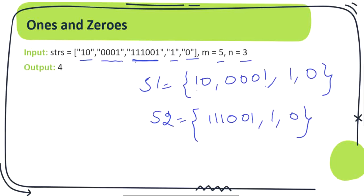Our problem asks for the largest subset length. We have two possible solutions: one subset of length three and another of length four. Subset one is going to be the largest because it has four strings, so that is going to be our output.